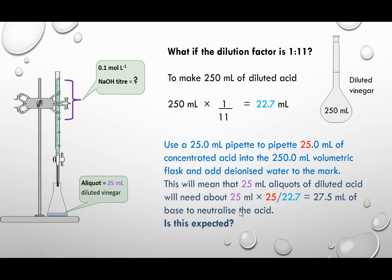And is this expected? Yes, because our vinegar is more concentrated than what we needed, because we use 25 of the concentrated vinegar instead of 22. So we would expect to use more of the 0.1 sodium hydroxide solution, because this is actually more concentrated than 0.1. So we're going to need more volume to neutralize this down here.